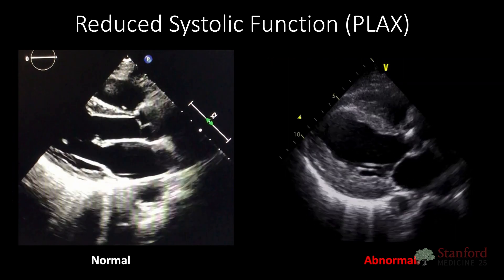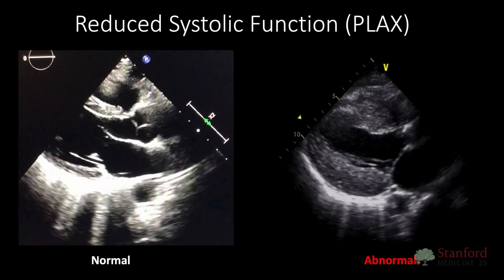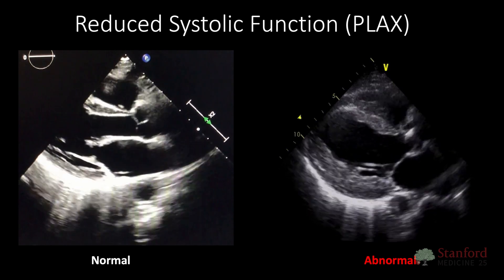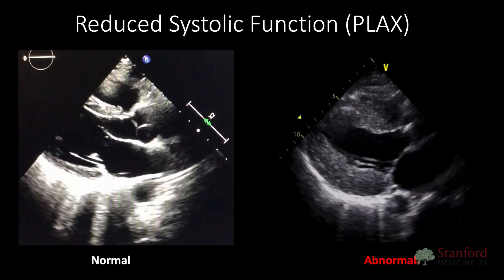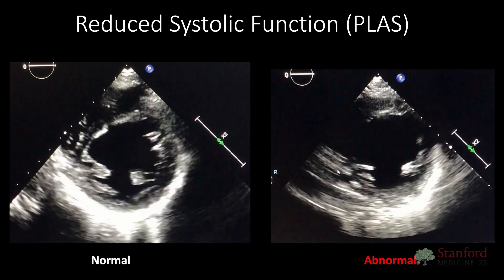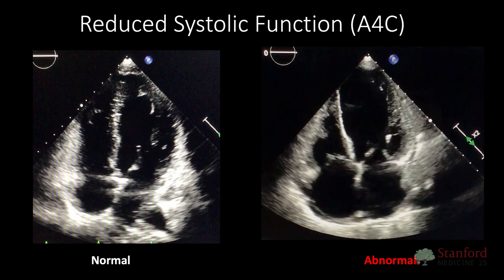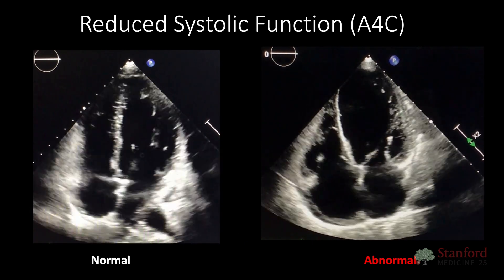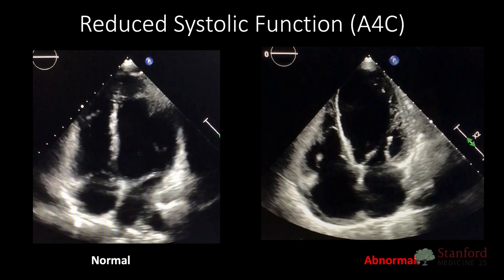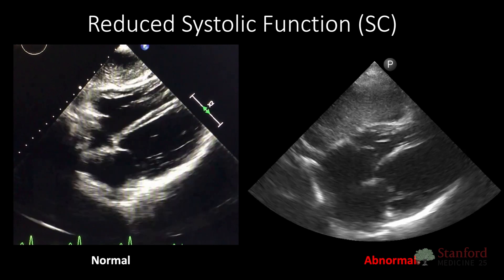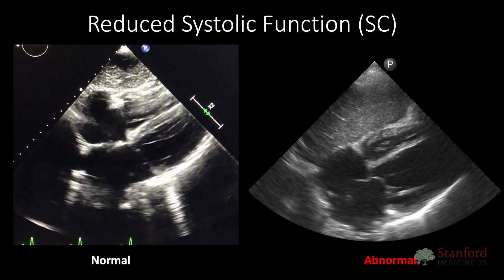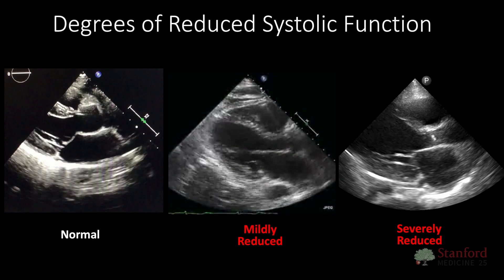Thinking about reduced systolic function — again, it's a qualitative measurement. Here we're showing a normal view of a parasternal long on the left and an abnormal parasternal long on the right, demonstrating a little bit of reduced ejection fraction. Here is a parasternal short from the same patient showing a mildly reduced ejection fraction, with a normal on the left. Here is an apical four-chamber with a normal on the left and an abnormal on the right — you can see decreased excursion of the endocardium and that LV cavity is not quite shrinking 50%. Finally, here is a subcostal view of a mildly reduced ejection fraction. You can also see normal, mildly reduced, or severely reduced as shown in these three videos.